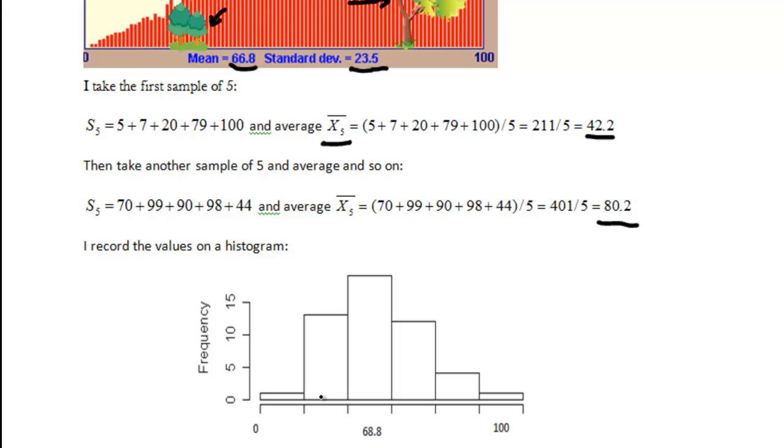So for instance the 42 would be somewhere here, the 80.2 would be say somewhere here and I just keep doing it over and over again I keep taking samples of 5 I average them and I just report them on a histogram. Okay, here, here, there, everywhere.